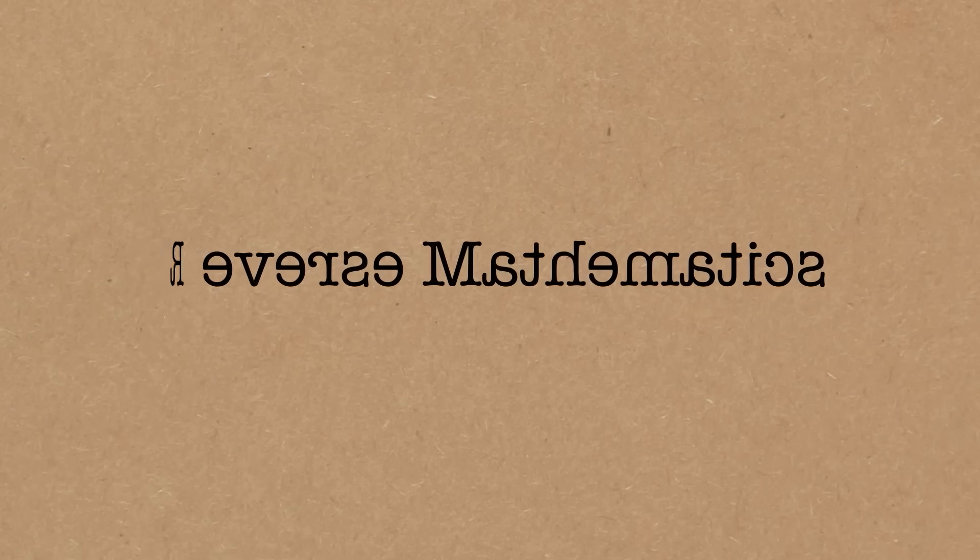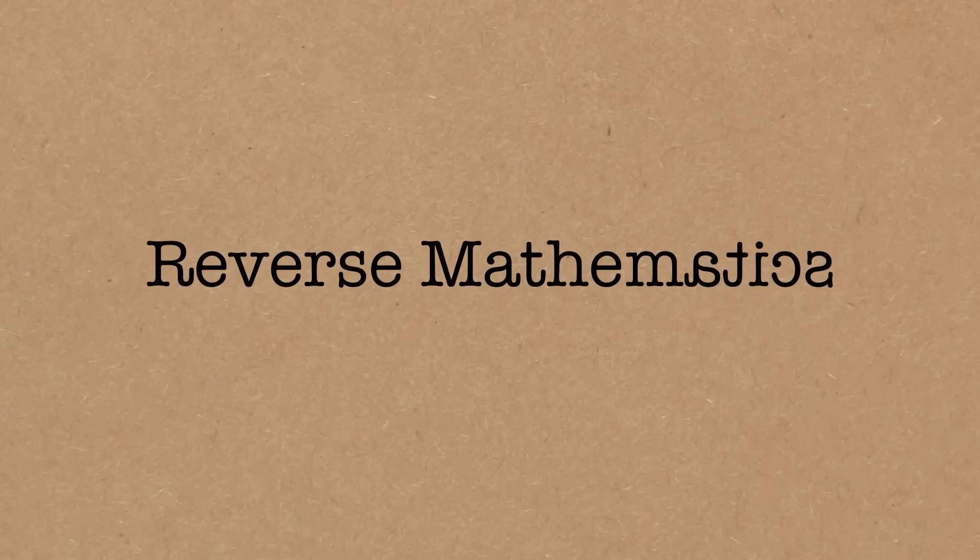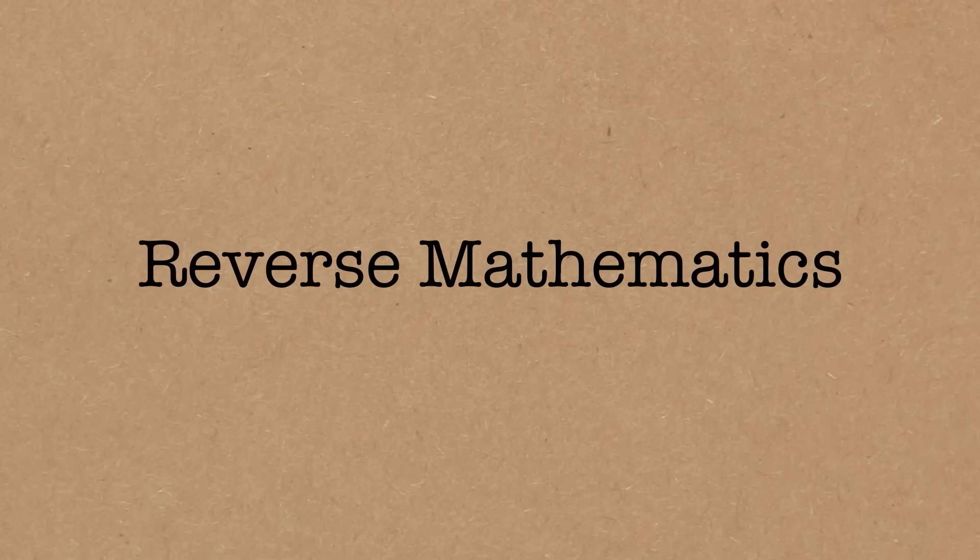So to do this we have to dive into an area of logic called reverse mathematics, which was invented by Harvey Friedman, who's the same guy who's come up with the tree sequence and the subcubic graph sequence. And it's not a coincidence that he's the same name.